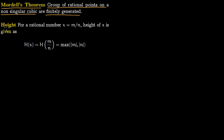The first notion is that of the height of a rational number. Say we are given a rational number X as M over N. The height of X, written as capital H of X, is the maximum of the absolute value of M or the absolute value of N. So you take the absolute value of the numerator and the absolute value of the denominator and take their maximum.